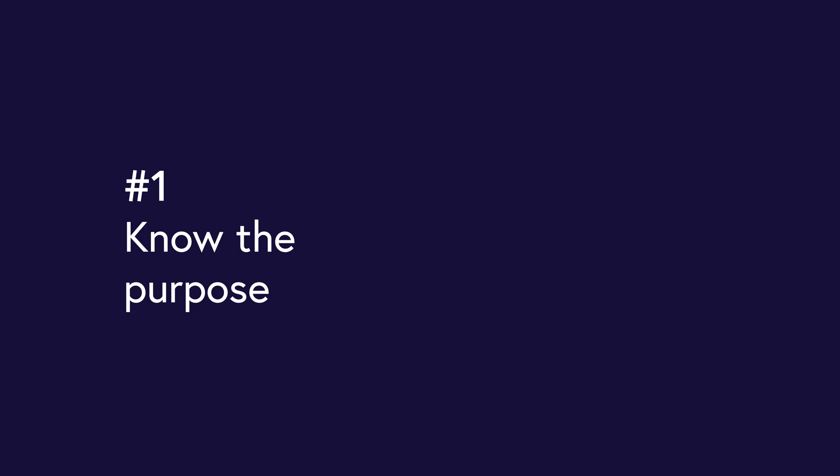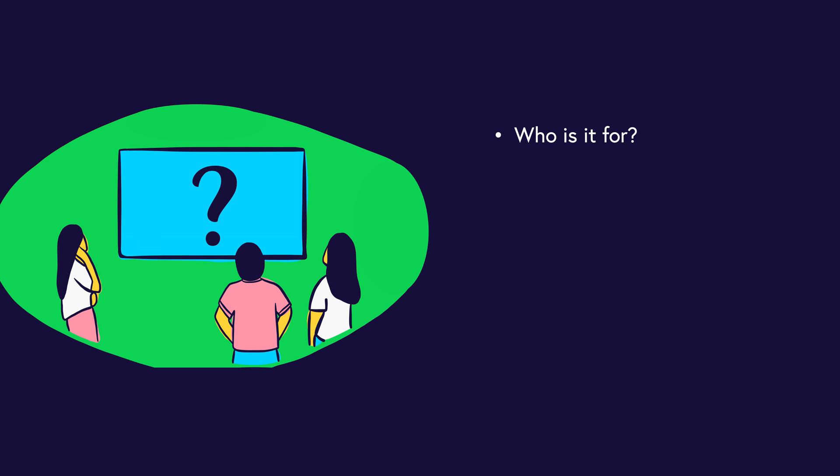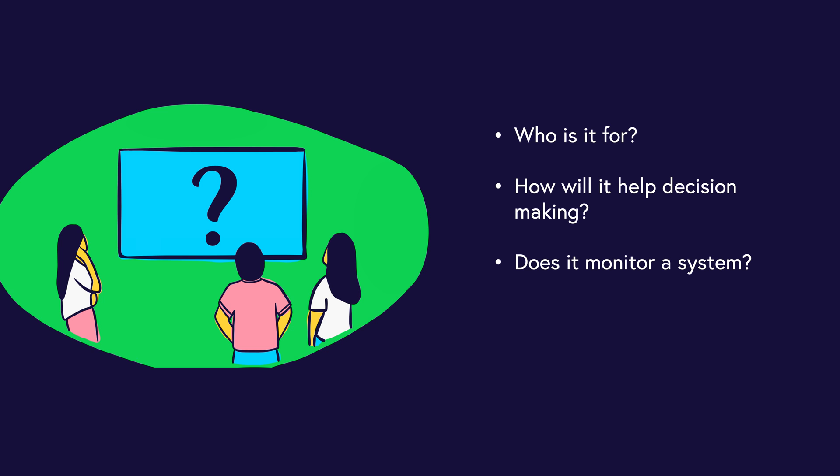By the end of this video, you're going to have the knowledge to design quality dashboards that let people know exactly what's going on. So the most important piece of advice we have is to be clear about what it is you're trying to achieve with your dashboard. Who is this dashboard for? How will it help with the decision making? Are they trying to monitor some kind of system or process? Or perhaps they're trying to track the progress towards a goal? The clearer you are on the purpose of your dashboard, the easier it's going to be to know what data to include and how to present it.